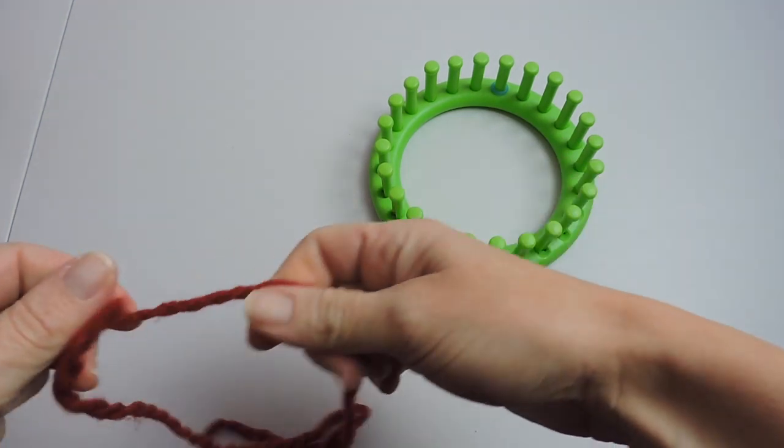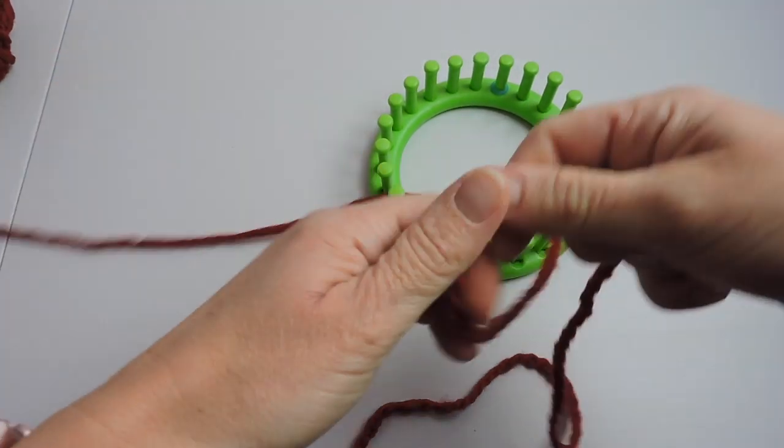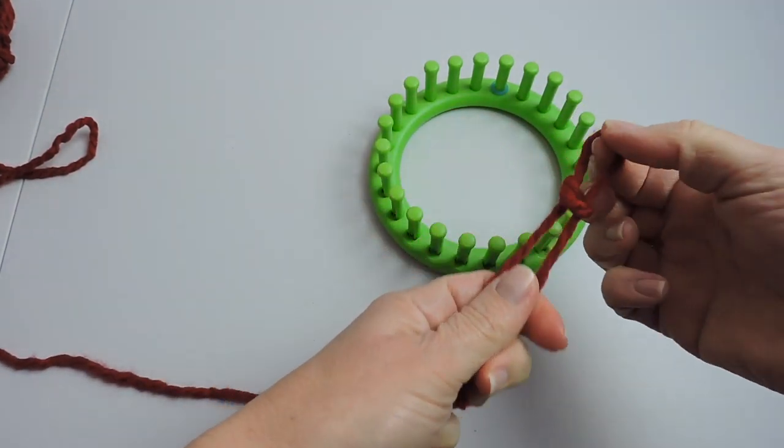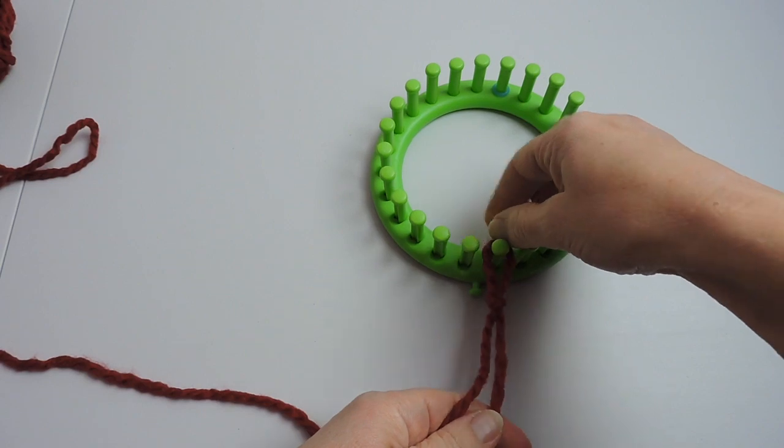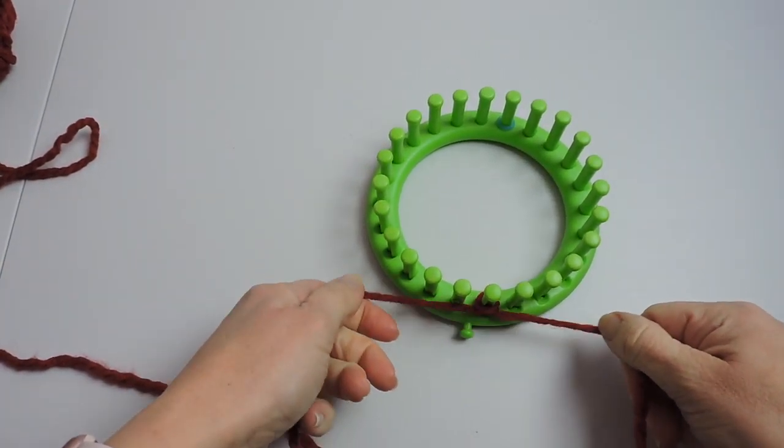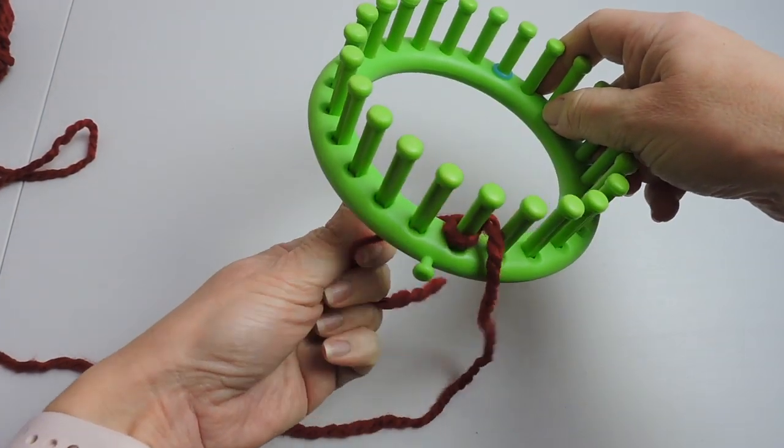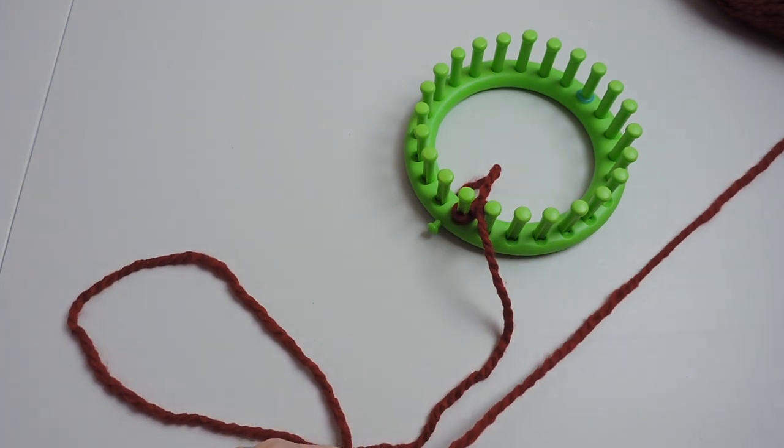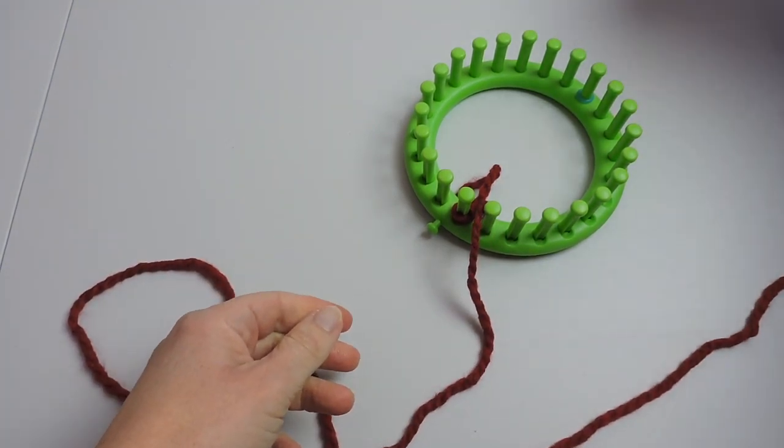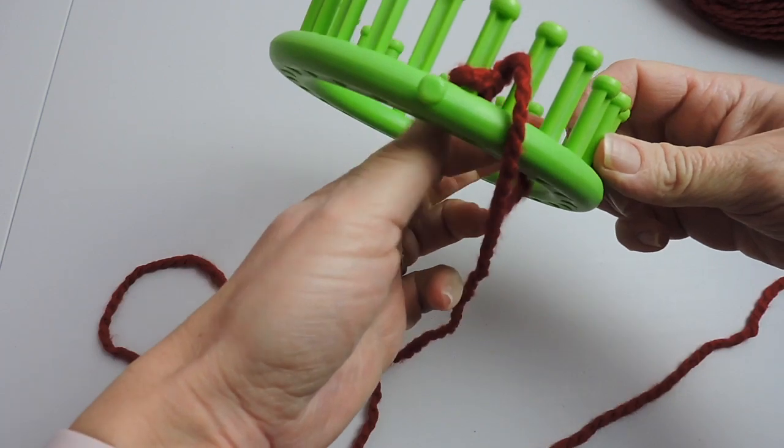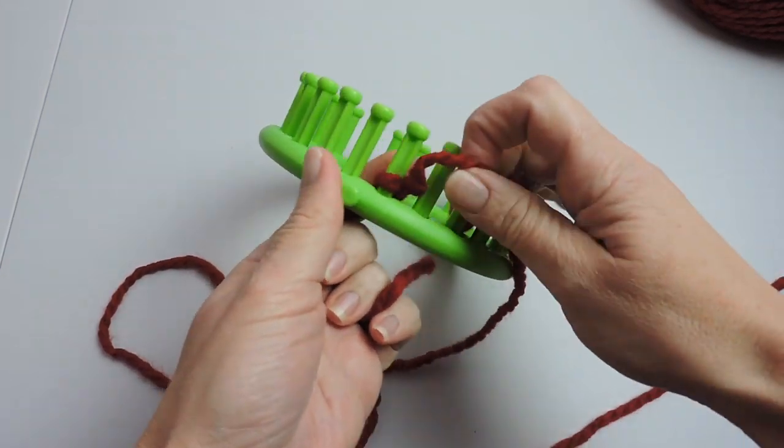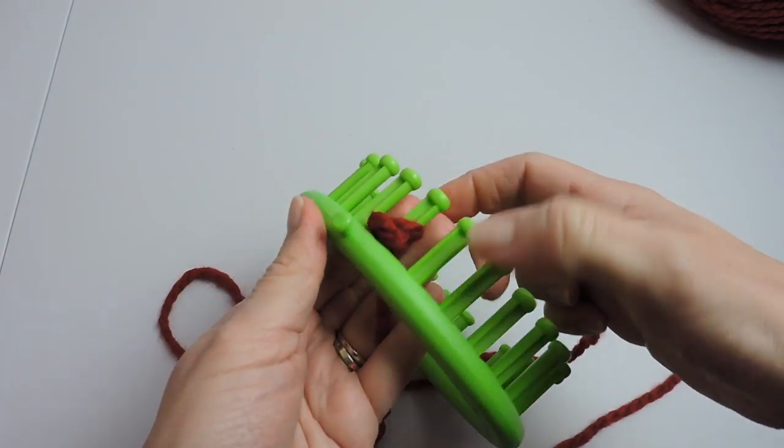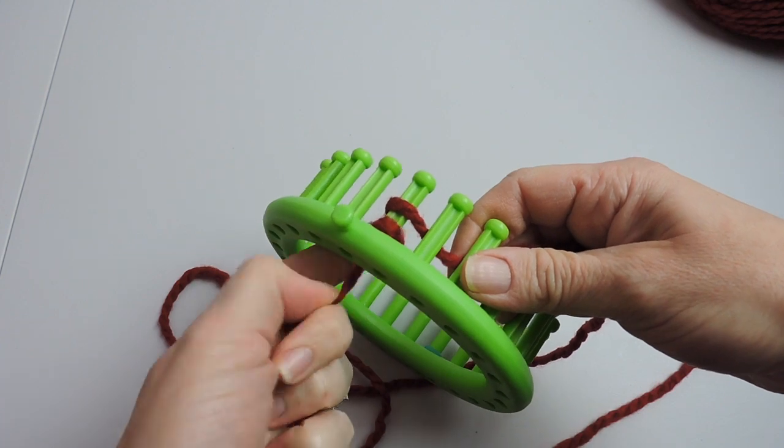We're using a 24 peg loom and I'm using number five bulky yarn. This yarn is from Hobby Lobby and I will list the exact yarn and color down below. So we're going to make a slipknot and attach it to the first peg and for this project we're going to use 12 pegs. So I went ahead and placed a stitch marker on my 12 peg to remind me not to go any further and what we're going to do is we're going to make a little e around each peg as our cast on.